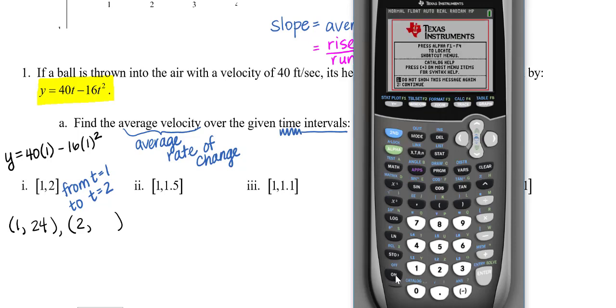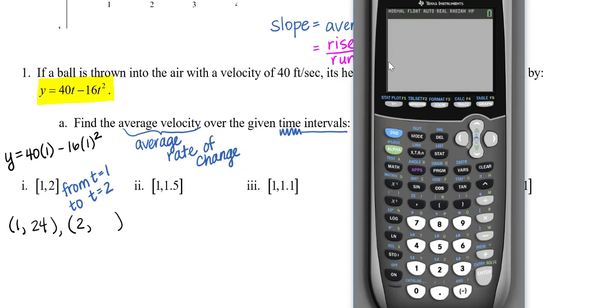I have my graphing calculator here. I'll go to y equals and type in my function: 40x minus 16x squared. Now you could use your home screen, calculate menu, or look at the graph. I'm going to use the table because most students use the table.